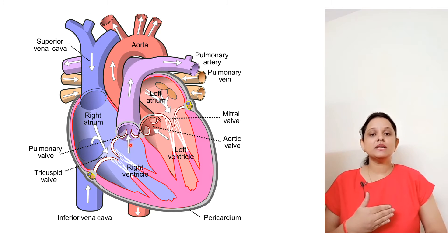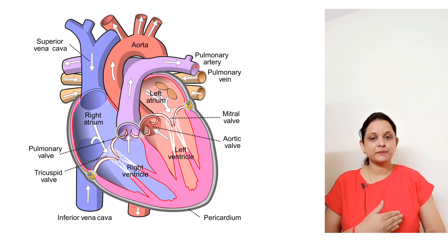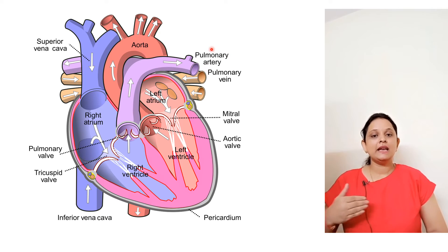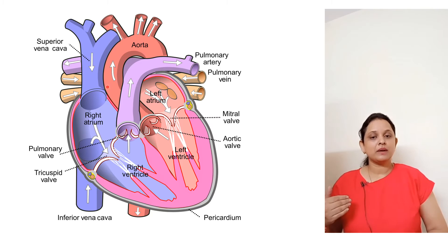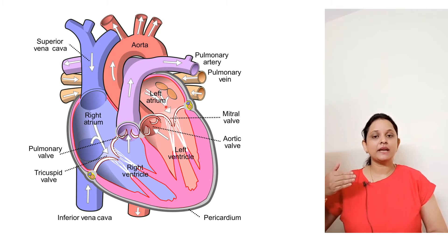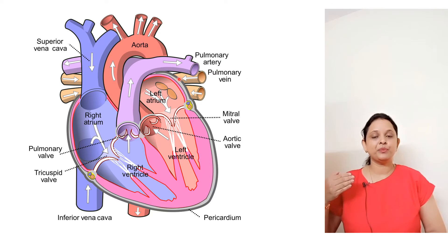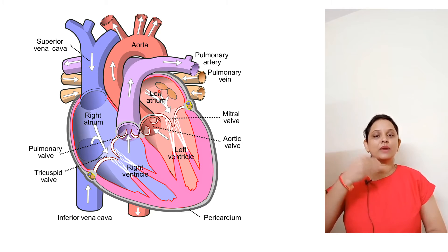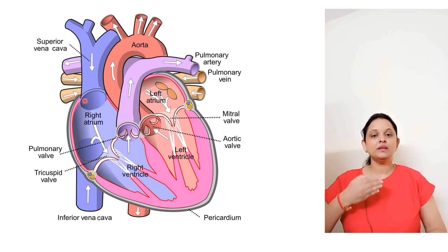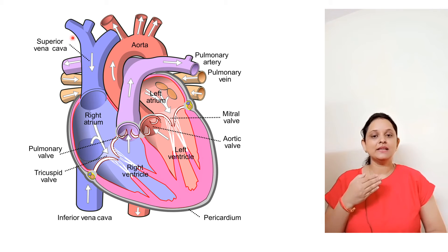The right ventricle of the heart is connected with the pulmonary artery. The left ventricle is connected with the aorta. The left atrium is connected with the pulmonary vein, which carries oxygenated blood. The right atrium is connected with the vena cava, which carries deoxygenated blood from the body.